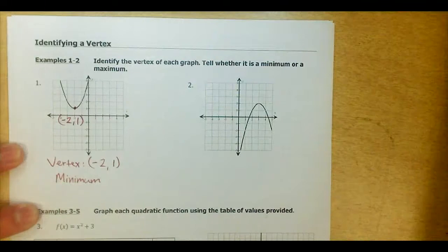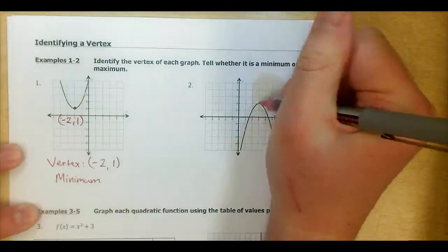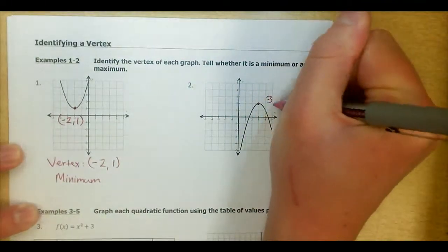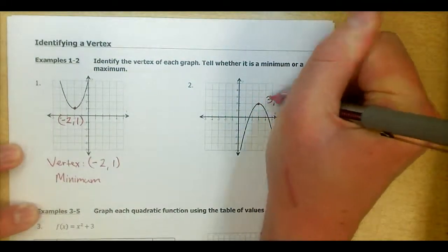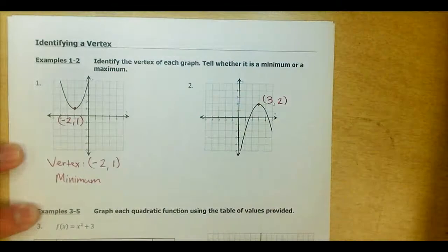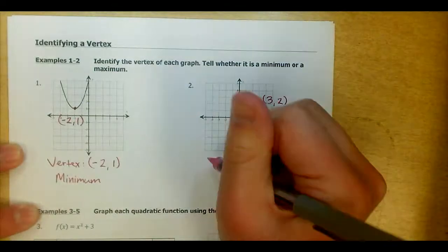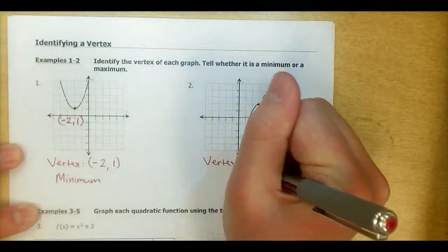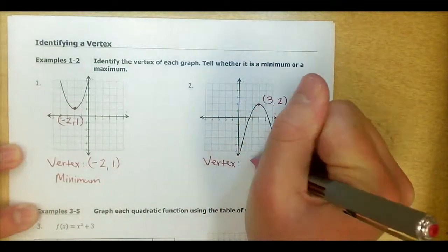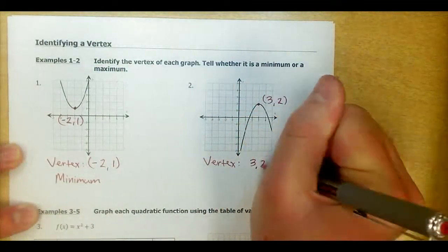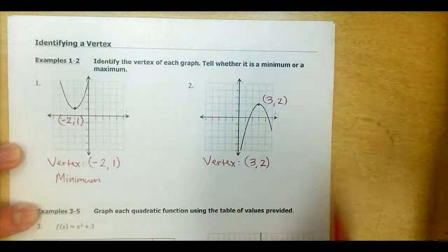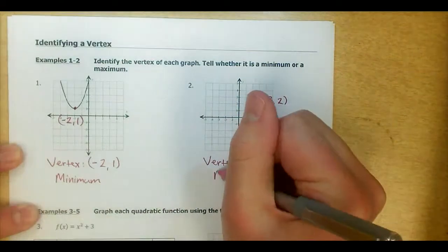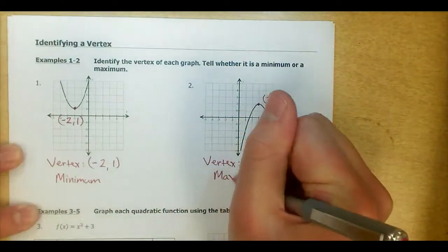In number 2, the vertex would be right here at the tip: the point (3, 2). So the vertex is at (3, 2), and in this case it's the highest point on the graph, so this vertex is a maximum.